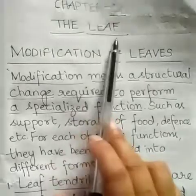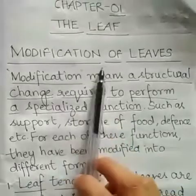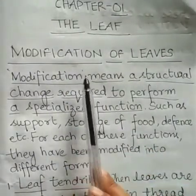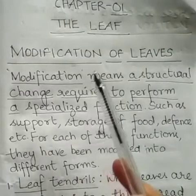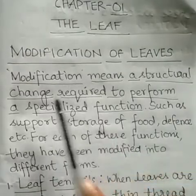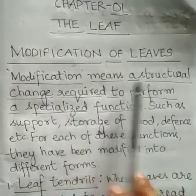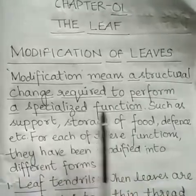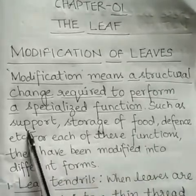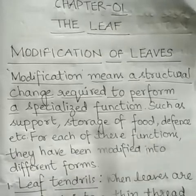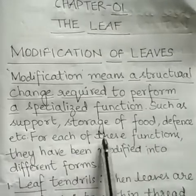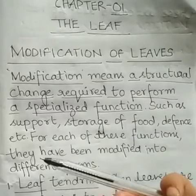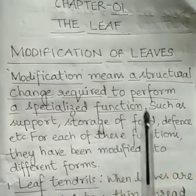Chapter 1: The Leaf - Modification of Leaves. What do we mean by modification? Modification means a structural change required to perform a specialized function, such as support, storage of food, defense, etc. Plants modify themselves according to the environment they are living in.